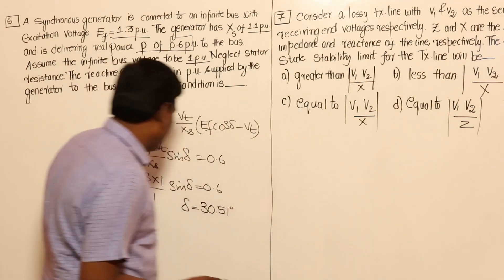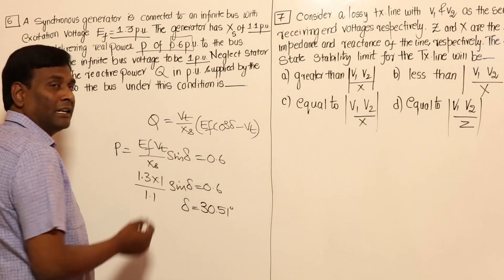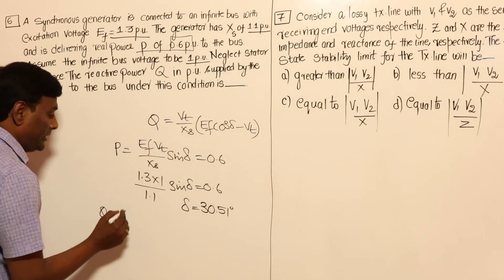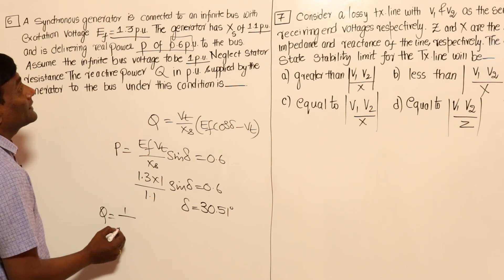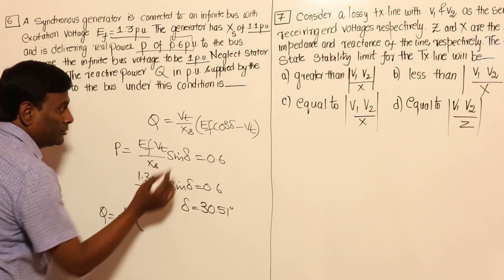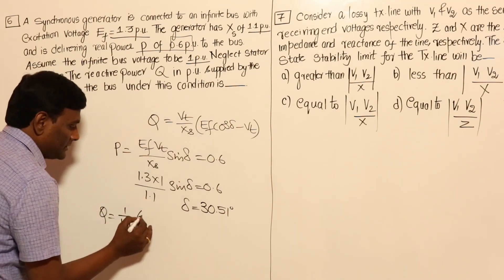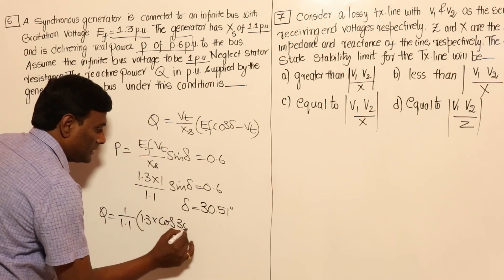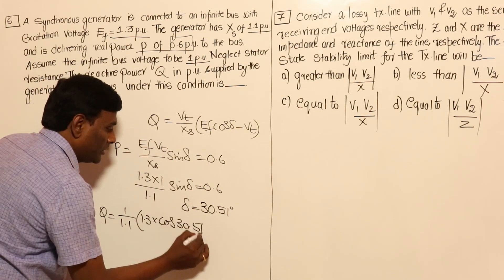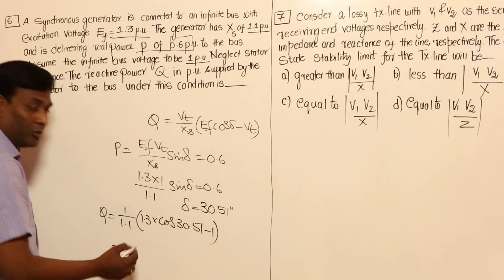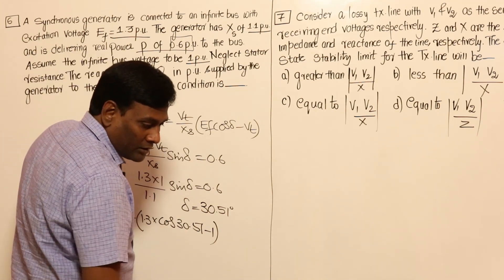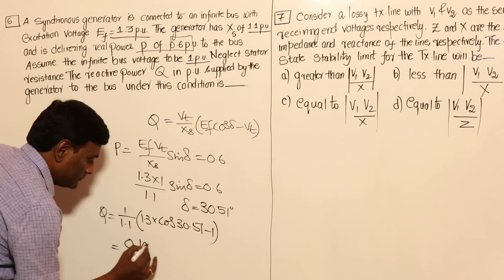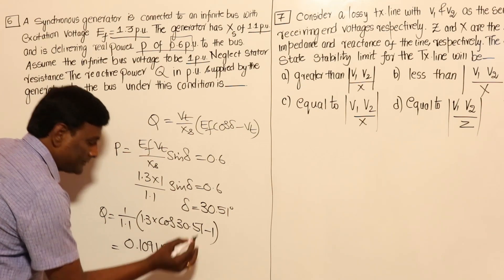Now use δ in the reactive power formula: Q = V_T / X_S × (E_F×cos(δ) − V_T) = 1/1.1 × (1.3×cos(30.51°) − 1). I got Q = 0.1091 per unit.